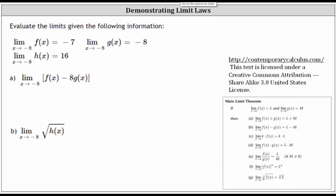For part a, we have the limit of f of x minus eight times g of x as x approaches negative eight. The limit of a difference is equal to the difference of limits, and therefore this is equal to the limit of f of x as x approaches negative eight, minus the limit of eight times g of x as x approaches negative eight.